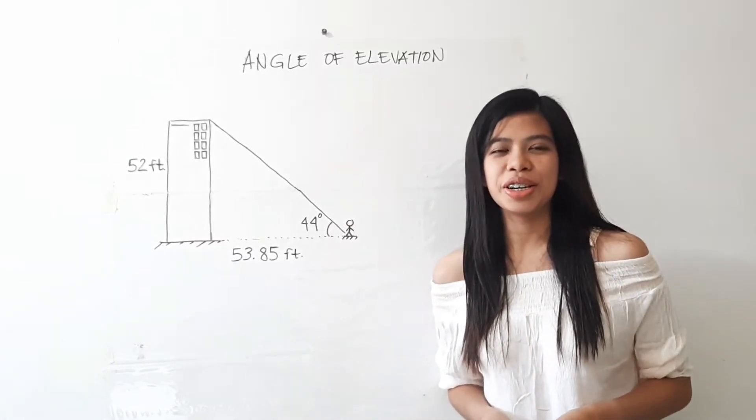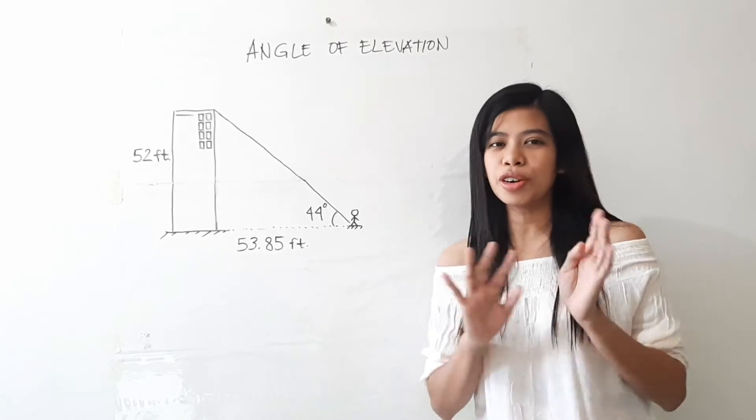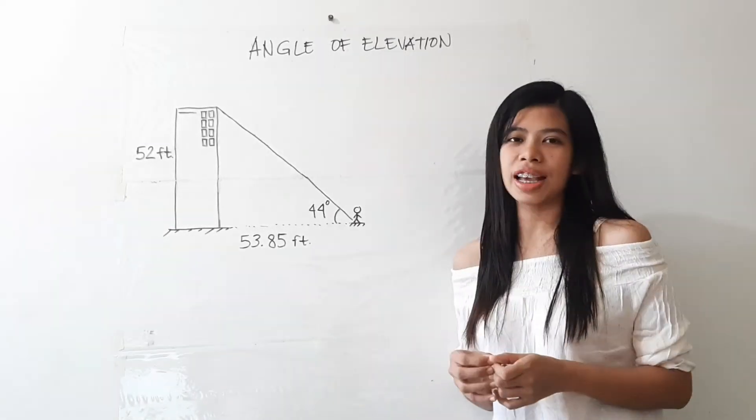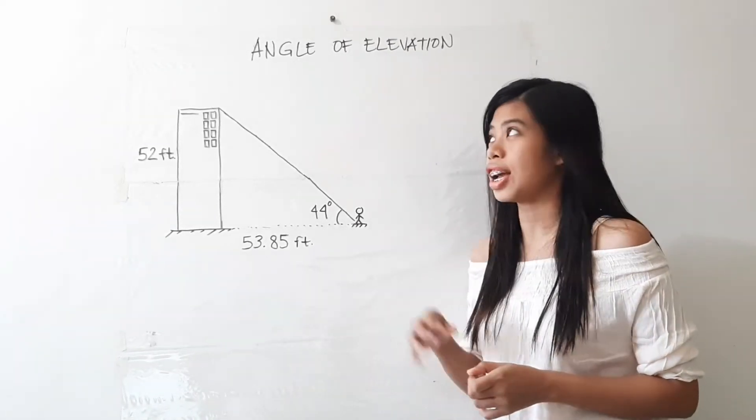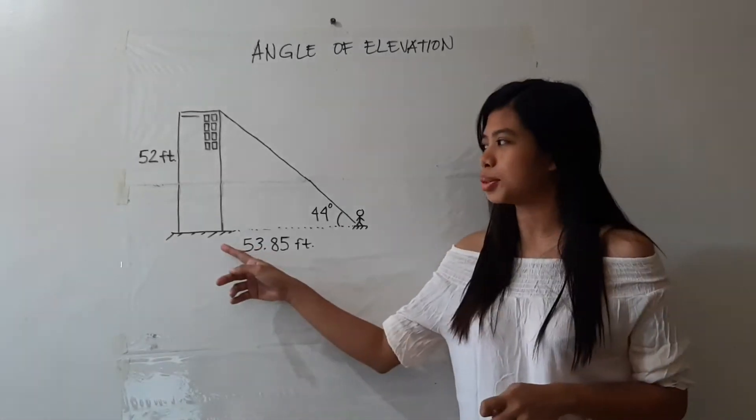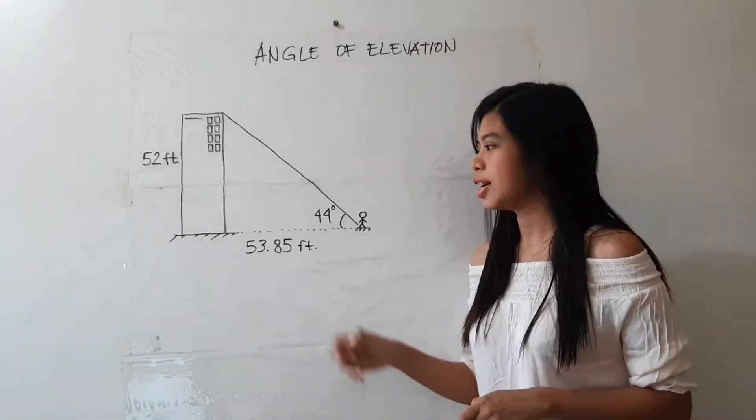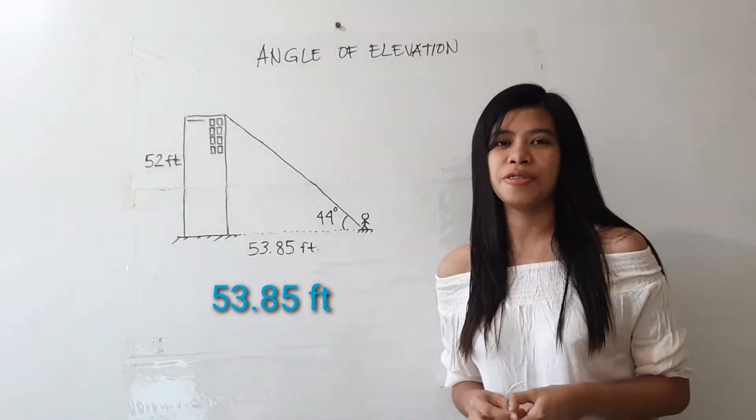Hi, good day learners. Today we are going to have another lesson about angle of depression. But before that, let me give you the correct answer on the previous activity regarding angle of elevation. You were asked to find the distance from the base of the building to the observer, and the correct answer is 53.85 feet.